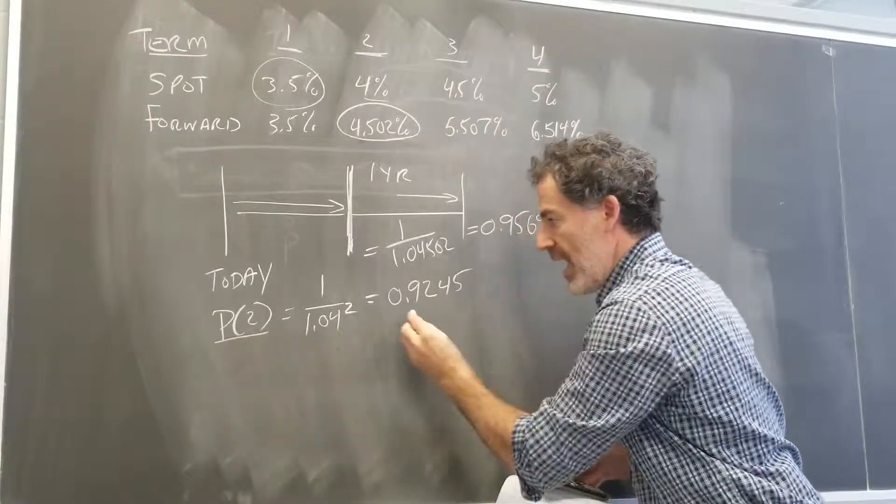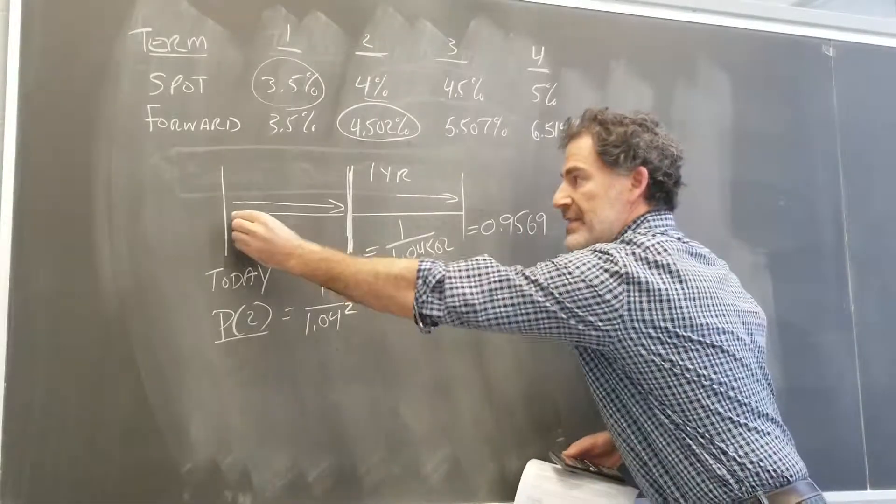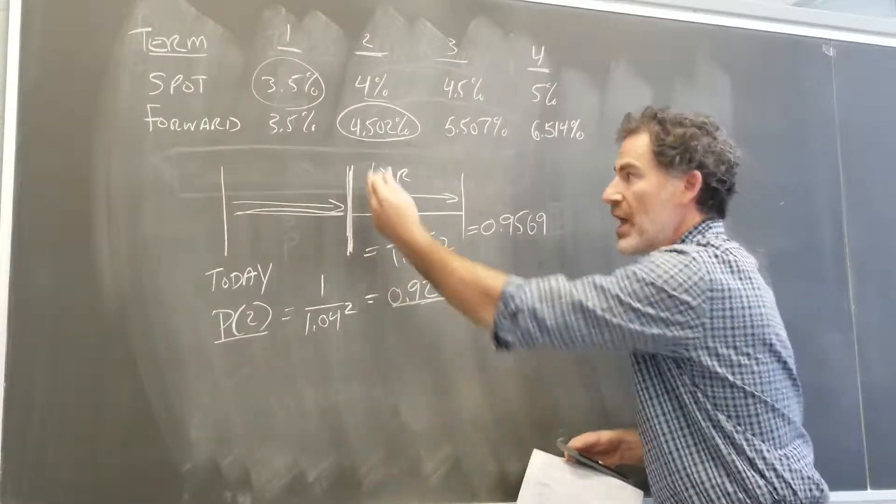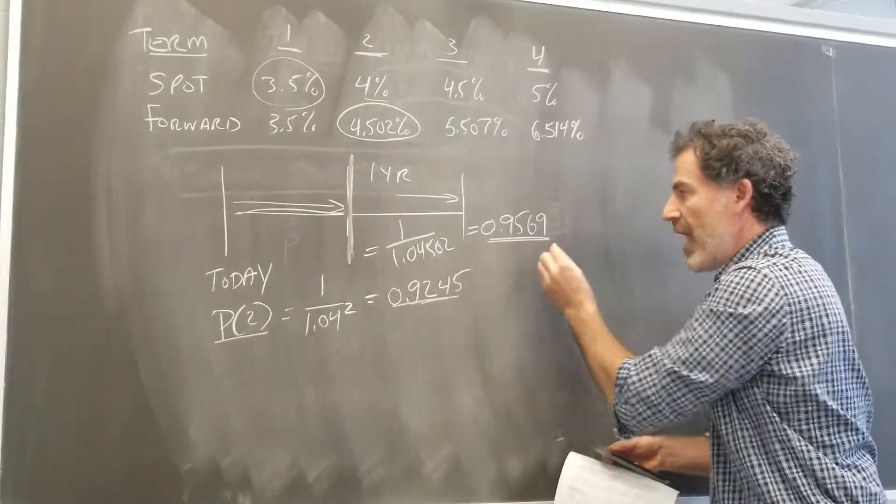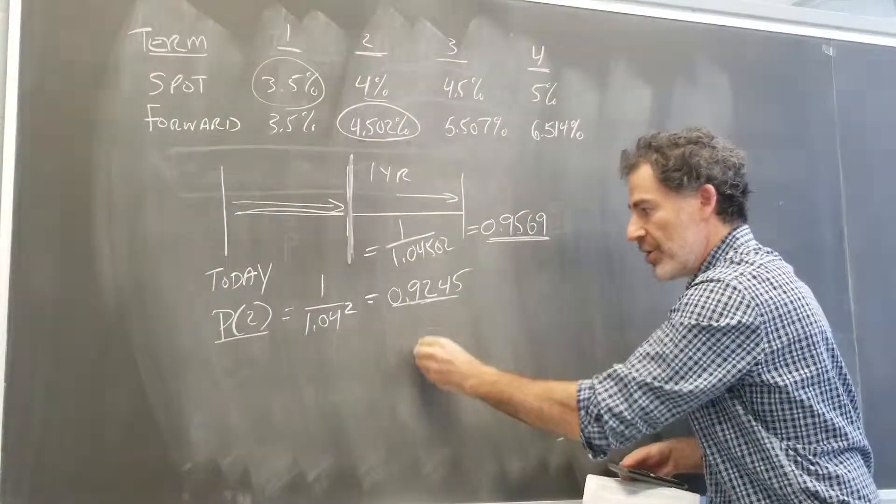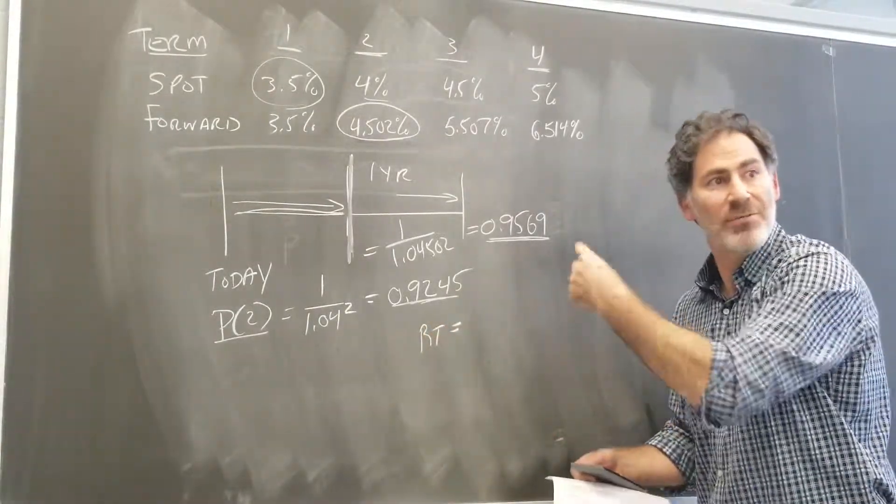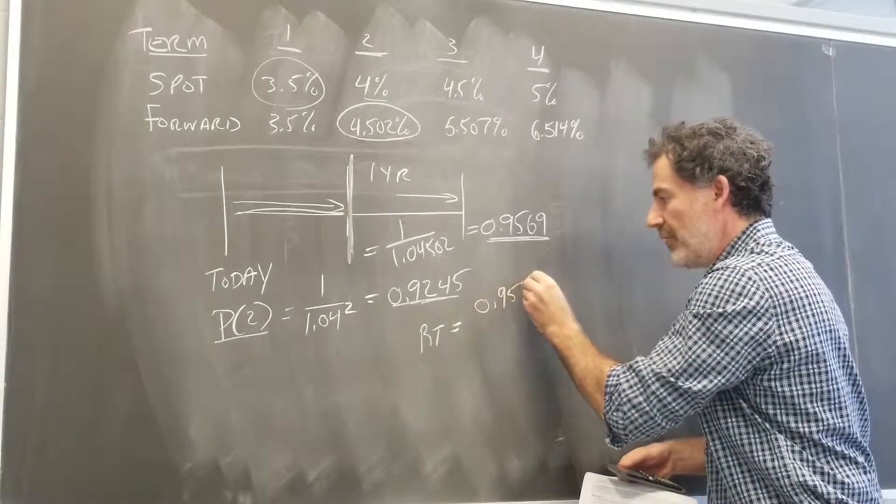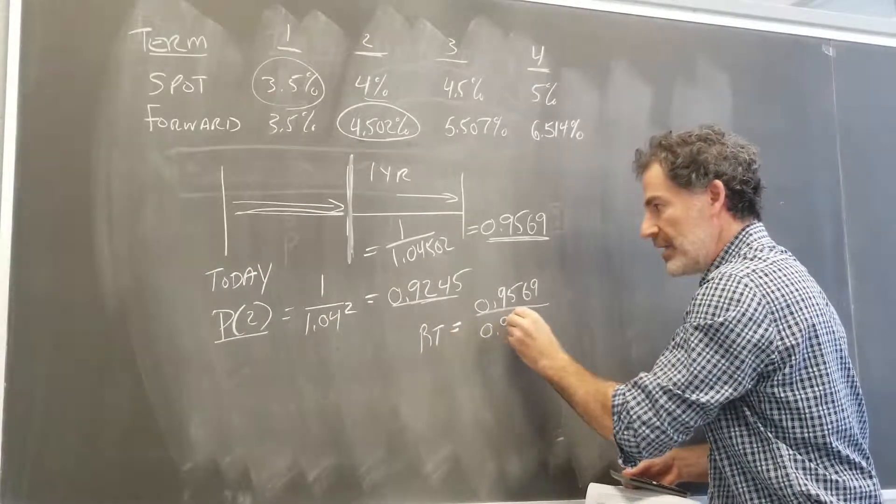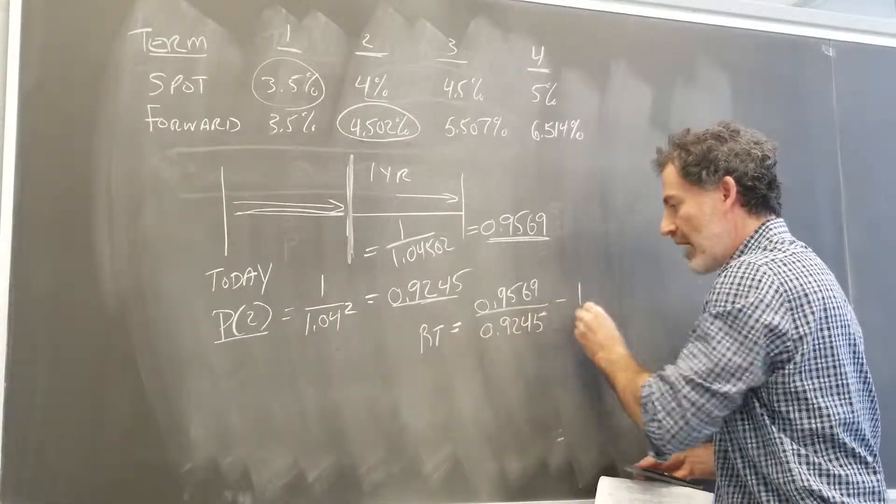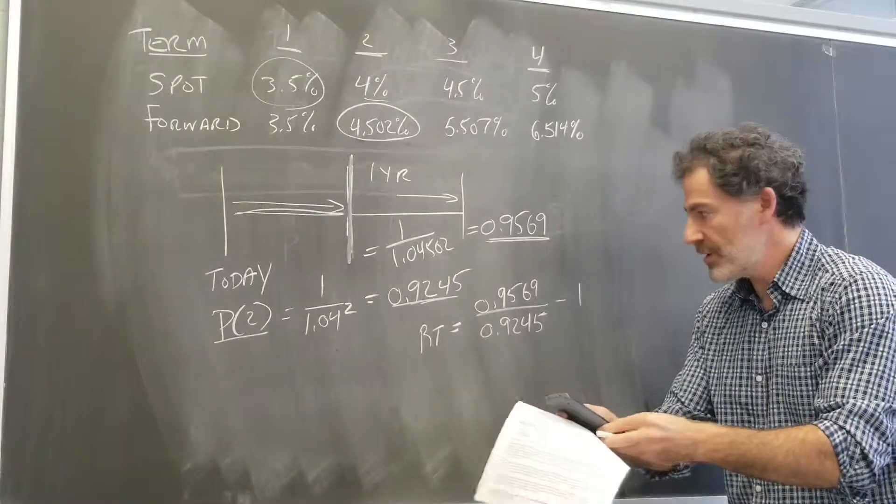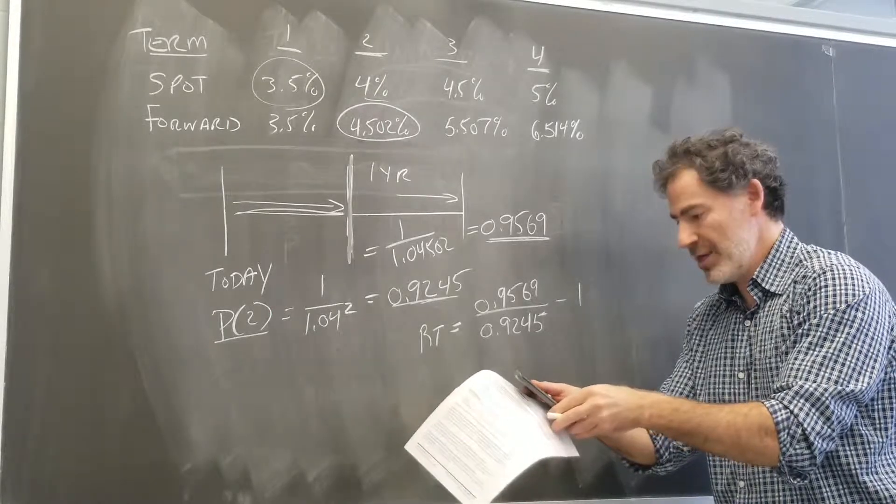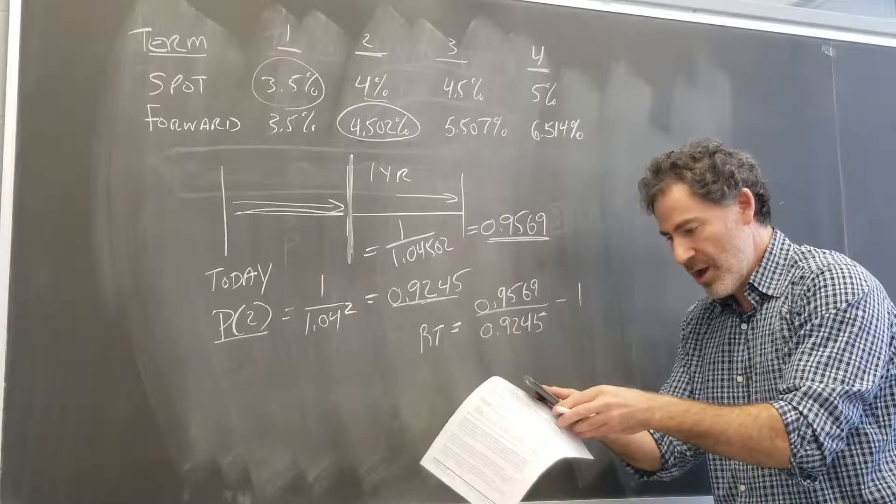So remember, we bought the bond today at $92.45. We're saying if the spots evolve as indicated by the forwards, this bond should be worth $95.69. What does that mean for our return? So the return should be ending value minus beginning value over beginning value. Or simply ending value, 9569, divided by 9245, subtract 1, and multiply by 100. And let's just do this math. 0.9569 divided by 0.9245. And if we subtract off 1, we get 3.5%.